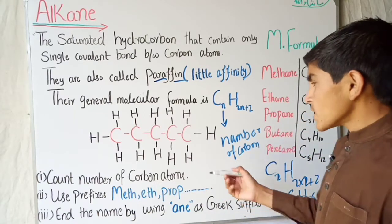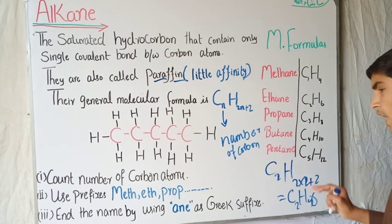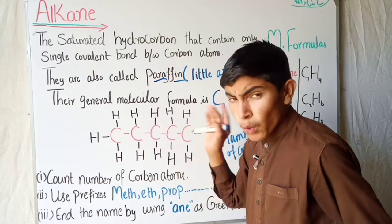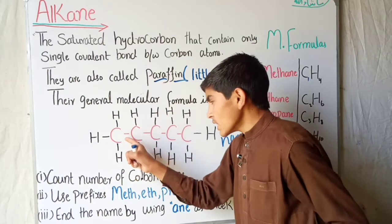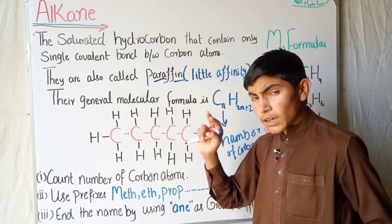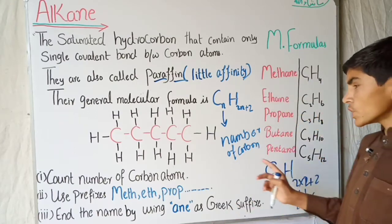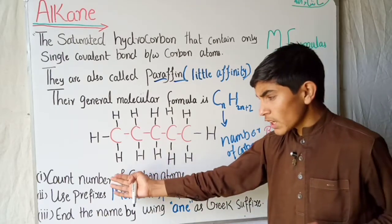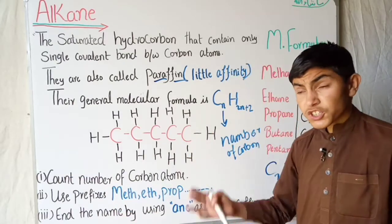You can see here the structural and molecular formula of pentane. In pentane there are 5 carbons and 12 hydrogens. Every carbon is attached with 4 covalent bonds — the end carbons have 3 bonds with hydrogen atoms and 1 with another carbon, while the middle carbons have 2 carbon bonds and 2 hydrogen bonds. This way with 5 carbons it is called pentane.